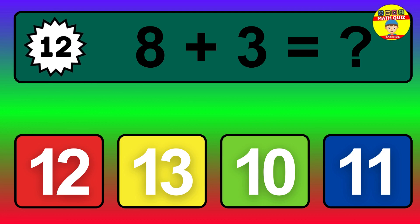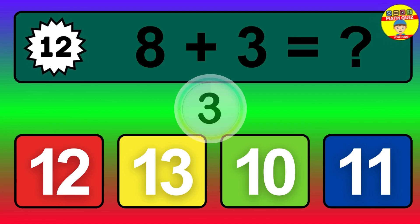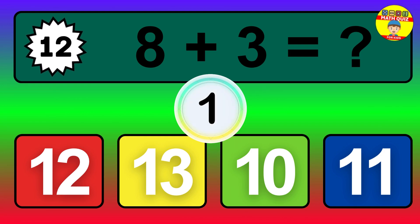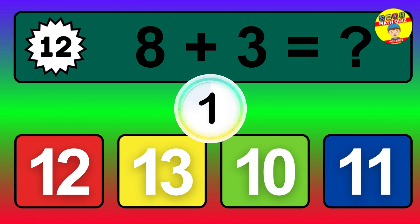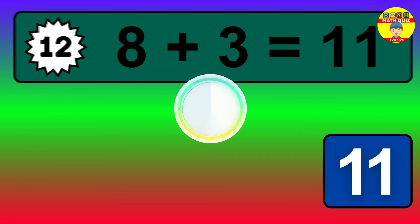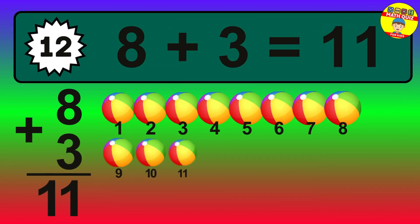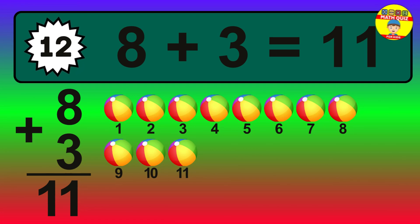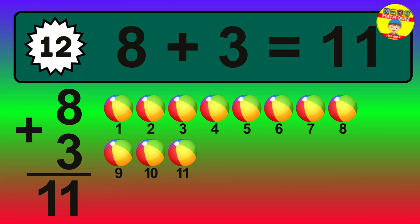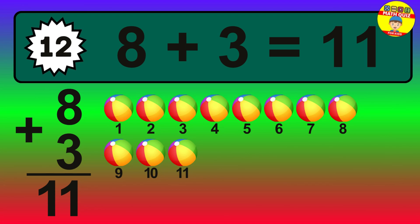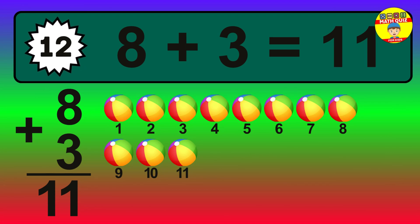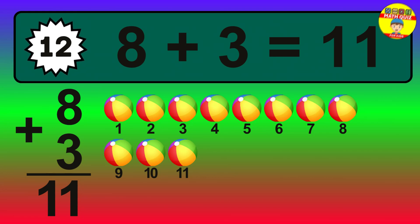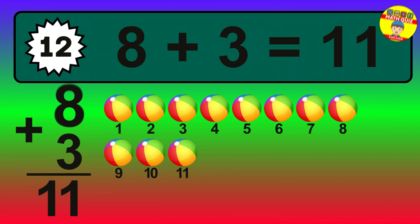Question 12. 8 plus 3 equals what? Let's count it: 1, 2, 3, 4, 5, 6, 7, 8, 9, 10, 11. The answer is 8 plus 3 is 11.